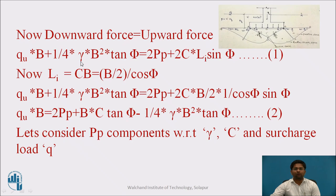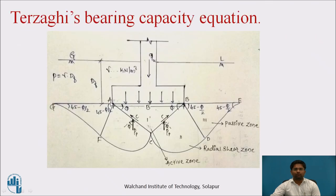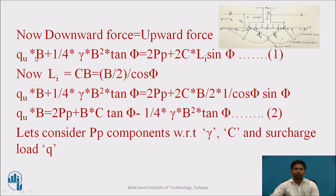Now, downward force equals upward force. For this figure, the equation is: downward forces are qu into B and weight of wedge acting downward; upward forces are PP acting upward and C acting upward. Therefore: qu·B + (1/4)·gamma·B²·tan phi = 2PP + 2C·LI·sin phi. Here PP for right side and PP for left side gives 2PP. Cohesion is acting in the inclined direction, therefore LI into sin phi.